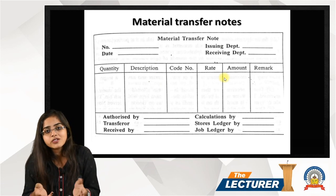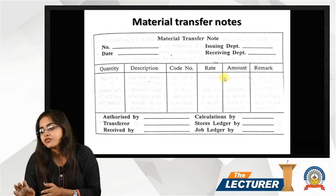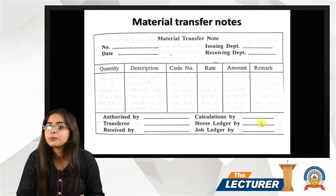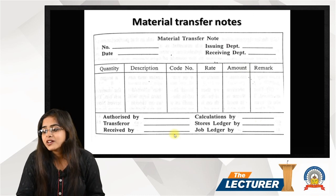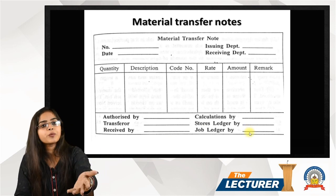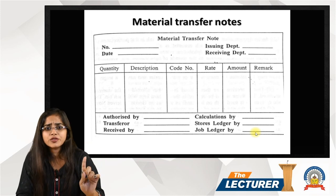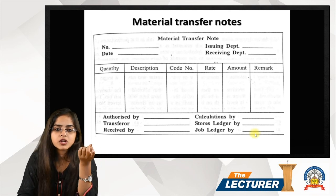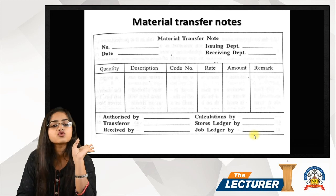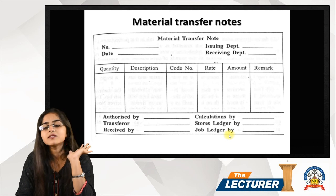Then, the purchase officer has a signature on any sign. Then comes stores ledger — the storekeeper has a sign. And job ledger — same department, job department receives it. If you have the sign, the purchase officer authorizes it, the receiver department signs, and the storekeeper provides their signature.